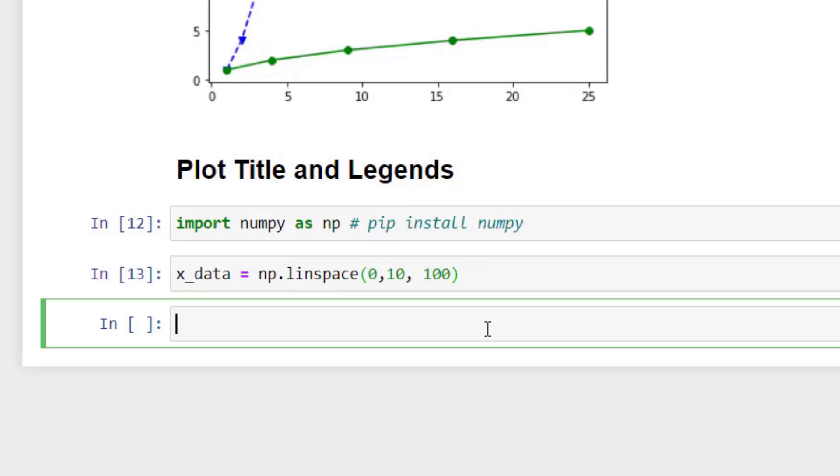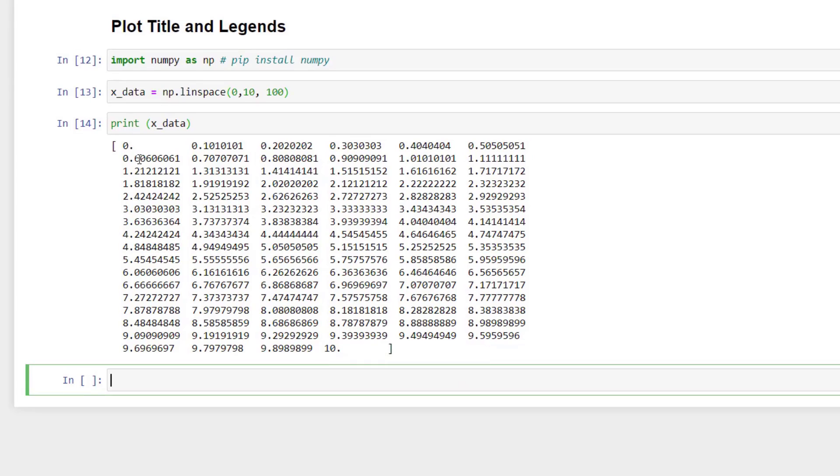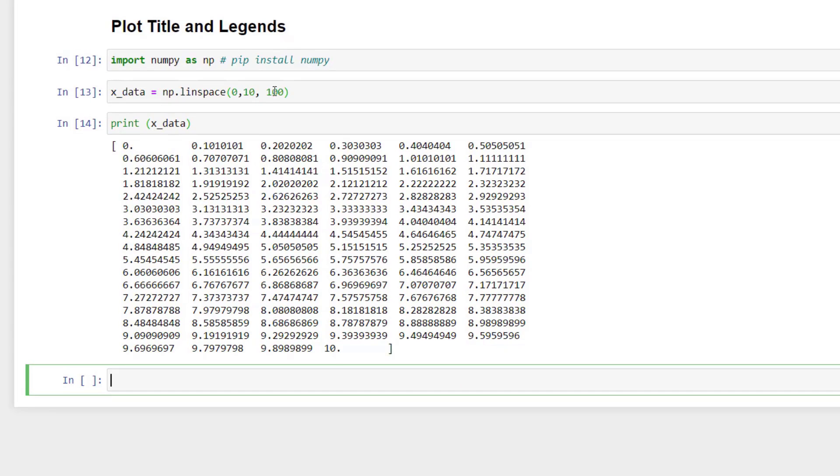Now in case you wanted to see how the data looks like, I can print the data and show you x data and I will execute this one. And this is how we got the data from 0 to 10 and how many data, 100 data.